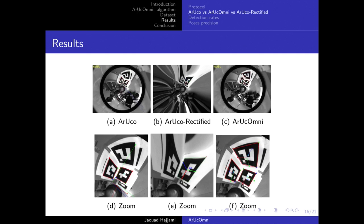Here are the three methods side by side. We run AruCo, AruCo Rectified, and AruCo Omni on the same image. We can clearly see that AruCo fails to detect some markers due to very strong distortions. AruCo Rectified fails as well and a large part of the image gets out of the image. AruCo Omni works well and detects all the markers.